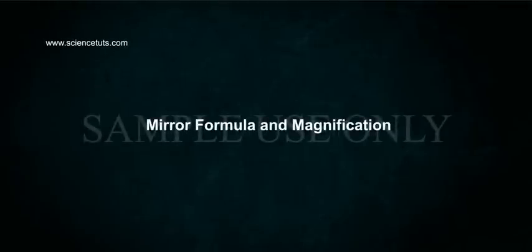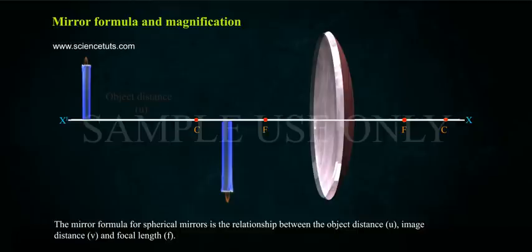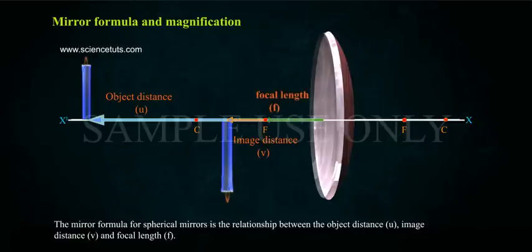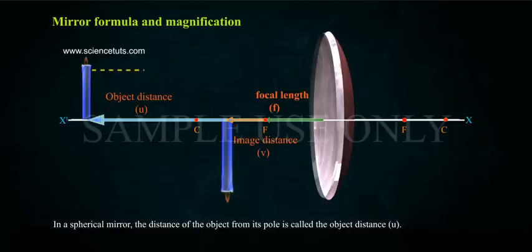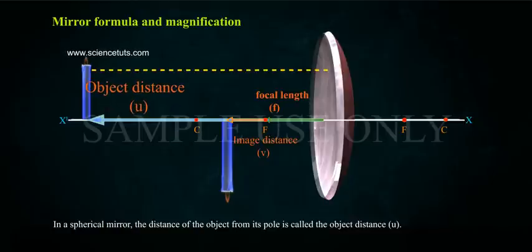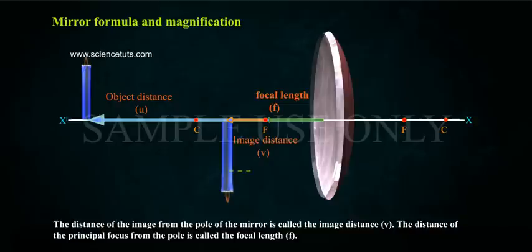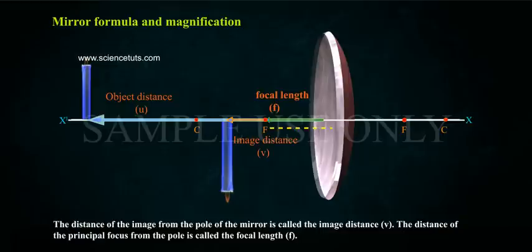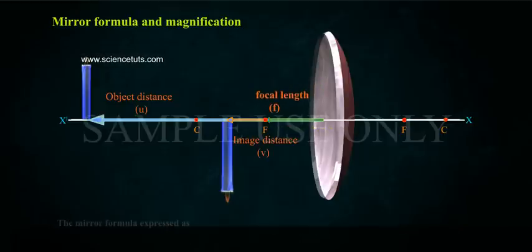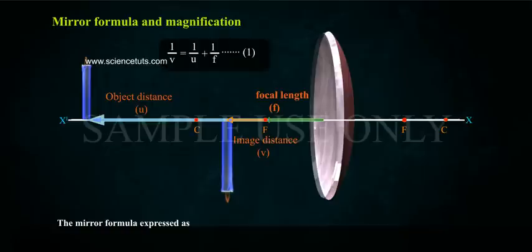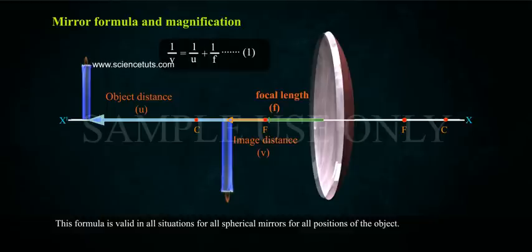10.2.4 Mirror Formula and Magnification. The mirror formula for spherical mirrors is a relationship between the object distance U, image distance V, and focal length F. The distance of the object from its pole is called the object distance U. The distance of the image from the pole of the mirror is called the image distance V. The distance of the principal focus from the pole is called the focal length F. The mirror formula is expressed as 1/V = 1/U + 1/F. This formula is valid in all situations, for all spherical mirrors, for all positions of the object.